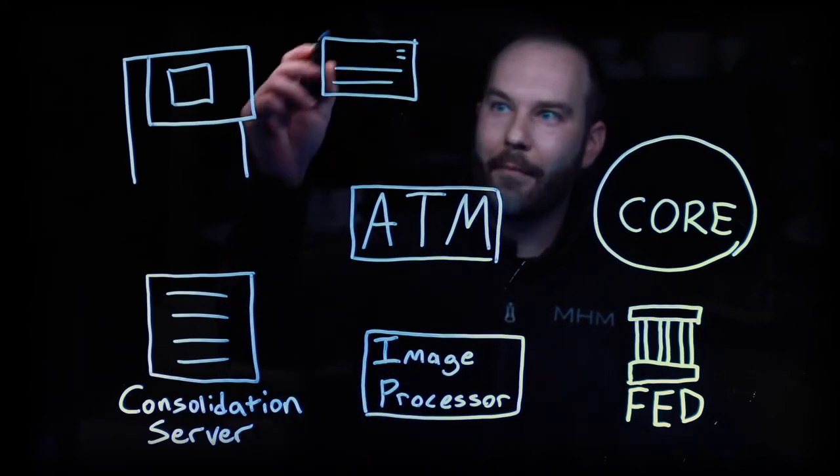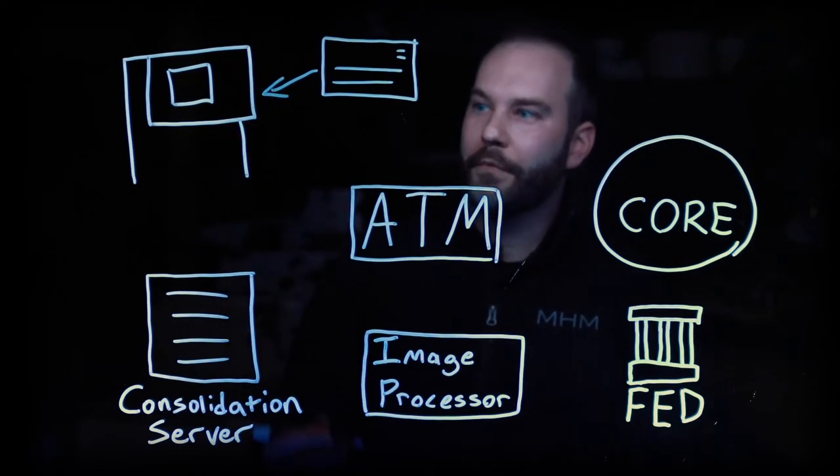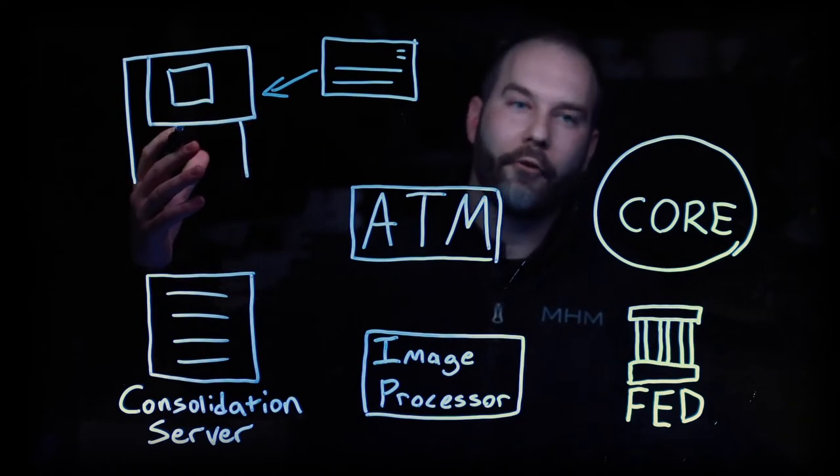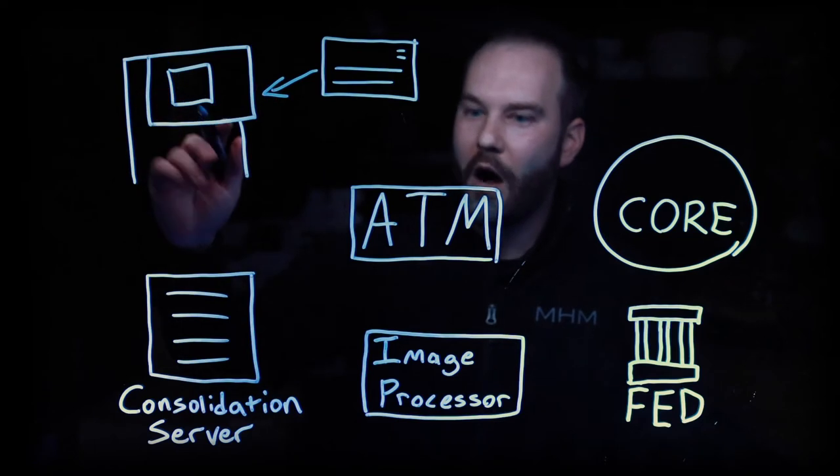The first thing that happens is you have a customer with a check and they will deposit that at the ATM. The ATM has character recognition built into it. It's scanning both the front and the back of the check and it is reading the amount lines and assigning that to the deposit.